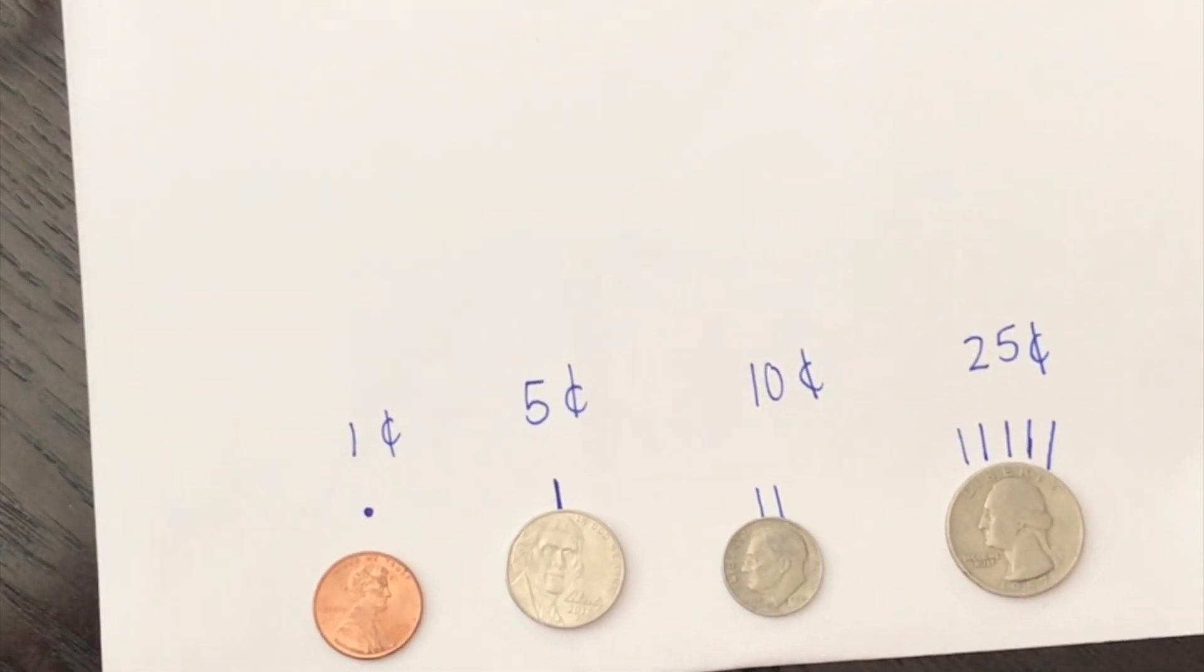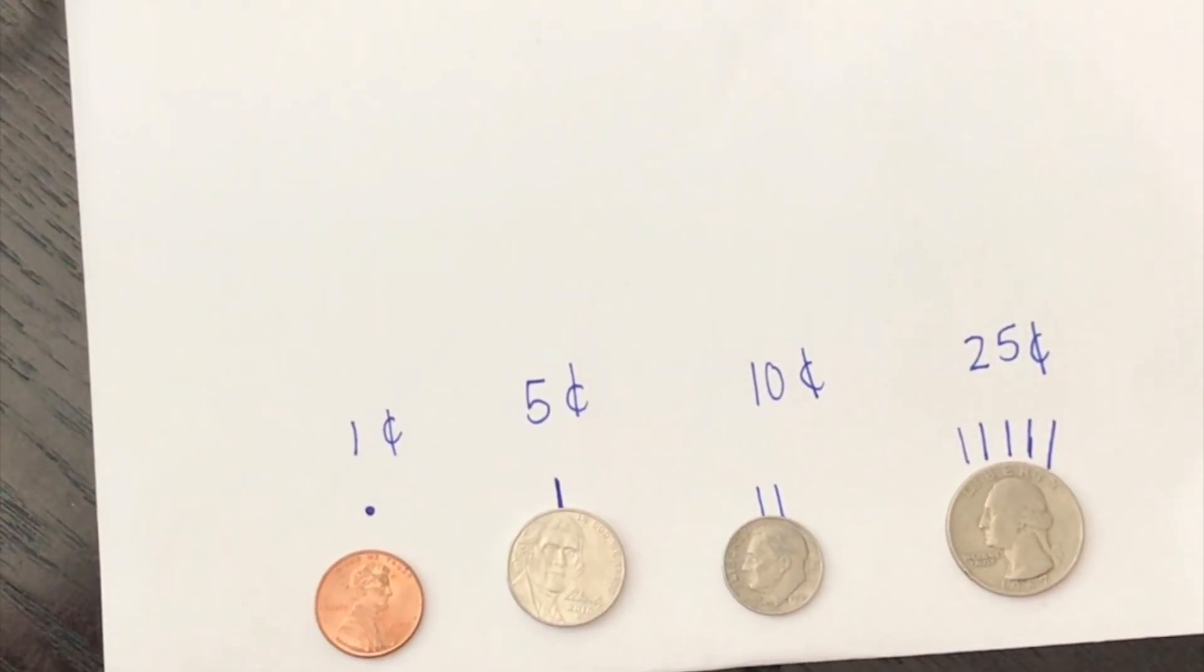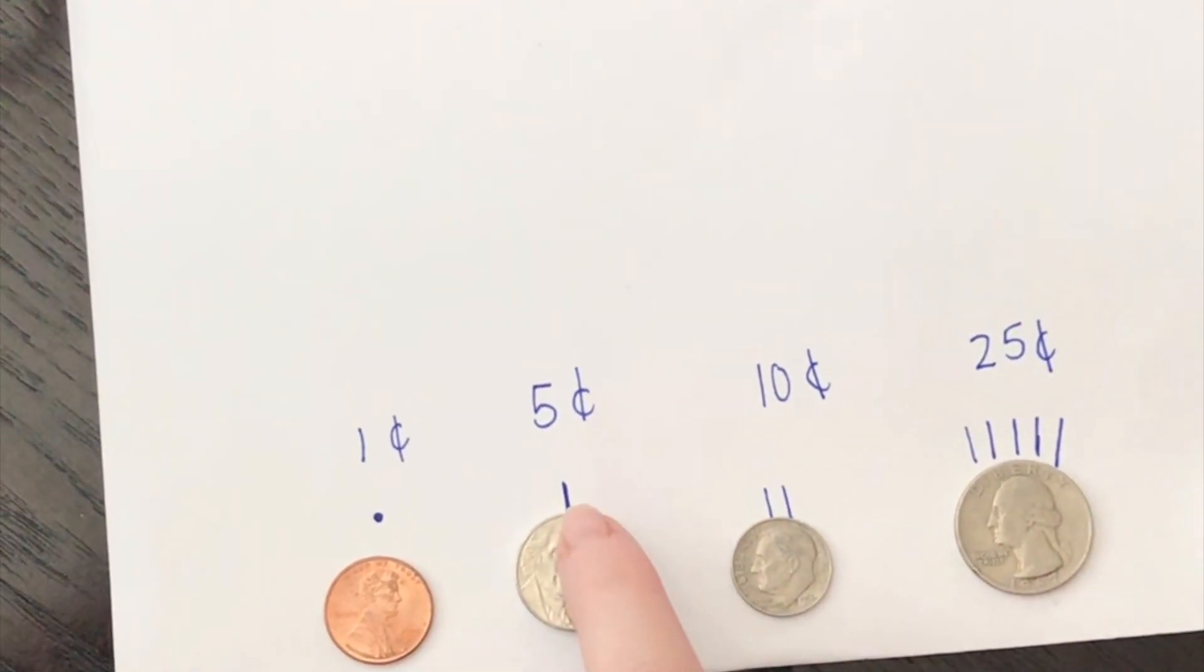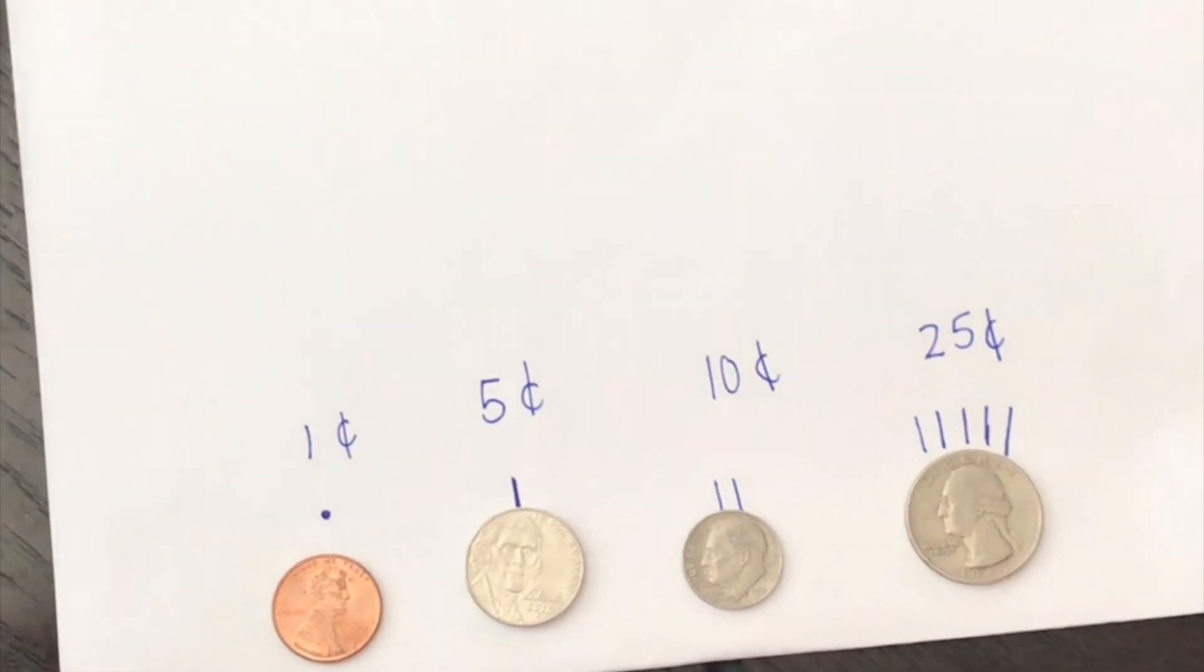Our nickel, we know our nickel is worth five, so he gets one hair. One hair on the head means that it's worth five. So we can count them up. Five, our nickel is worth five cents.